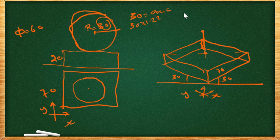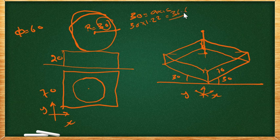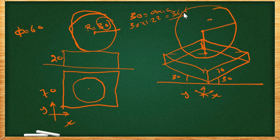For the isometric view of the sphere, the actual radius is 30 mm. We multiply by the isometric factor 1.22 using a calculator: 30 × 1.22 = 36.6 mm. So the isometric radius for drawing the circle representing the sphere is 36.6 mm.